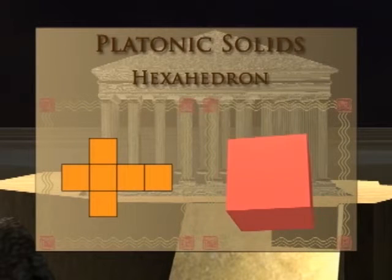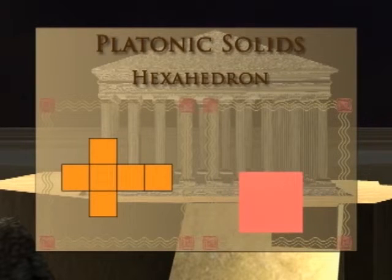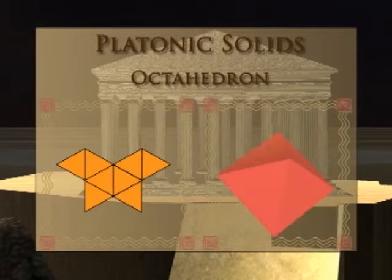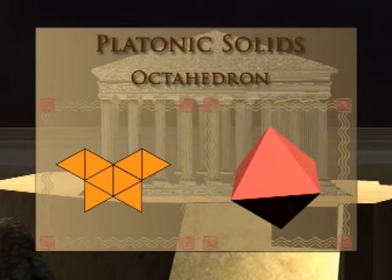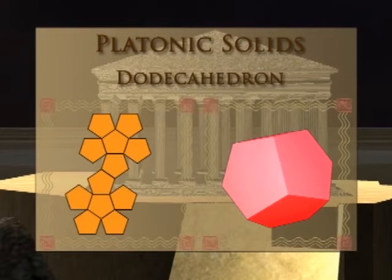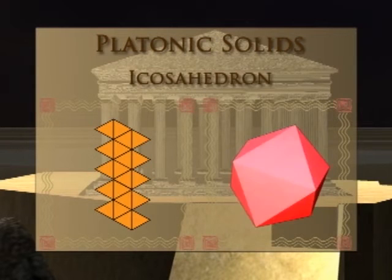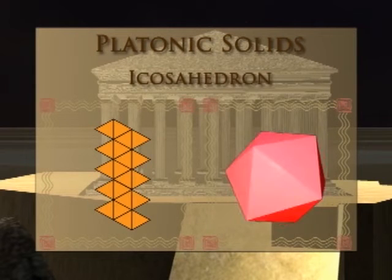Like the tetrahedron, the edges, vertices, and angles of the cube are congruent to each other. The other Platonic Solids include the 8-faced octahedron, the 12-faced dodecahedron, and the 20-faced icosahedron. With all these figures, the underlying regular polygon shape ensures congruent edges, angles, and vertices.